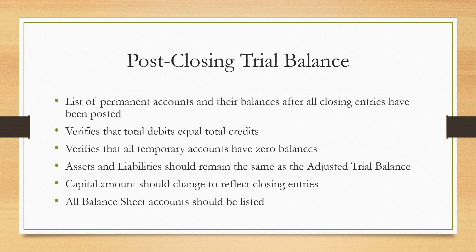Now looking at the post-closing trial balance — it is a list of permanent accounts and their balances after all closing entries have been posted. It verifies that our total debits equal our total credits and that all temporary accounts have a zero balance. Assets and liabilities should remain the same as in your adjusted trial balance, while the capital amount should change to reflect the closing entries that were made.